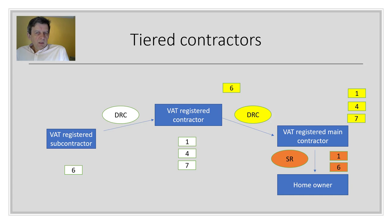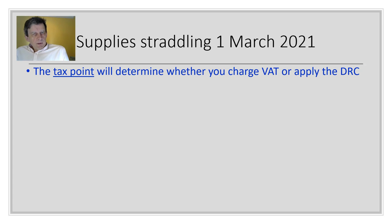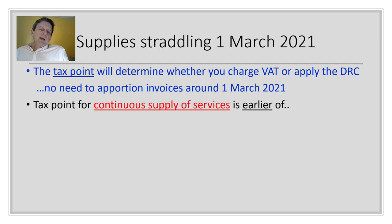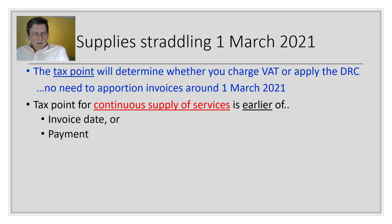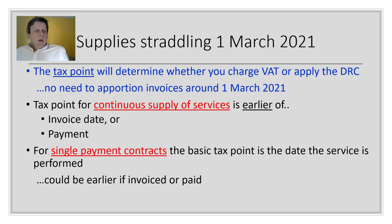There are some compliance issues to address. Regarding supplies straddling the 1st of March 2021, the tax point determines whether you charge VAT under the old rules or apply the domestic reverse charge — there is no apportioning of invoices around that date, it's either all old rules or all new rules. In the building industry the tax point tends to be under continuous supplies of services: the earlier of invoice date or payment. For a one-off job it's when the service is completed, though it could be earlier if invoiced or paid — for example, a deposit would create an earlier tax point, but only on the deposit amount.